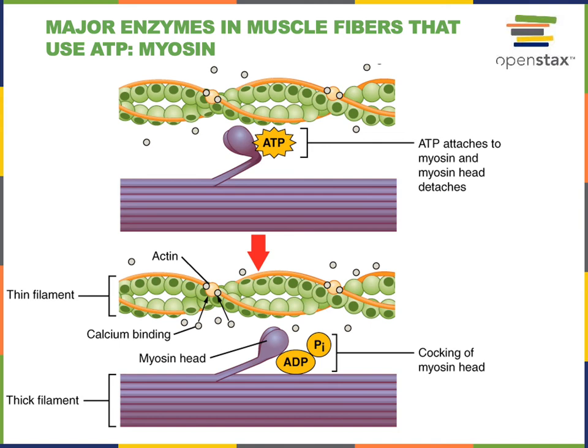Myosin is a major enzyme in muscle fibers that uses ATP. Remember from the power stroke cycle of the sliding filament theory that in the third step, cross-bridge attachment, ATP attaches to the myosin head, stimulating cross-bridge attachment. Then myosin performs hydrolysis of ATP in order to fuel cocking of the myosin head in the fourth step of the power stroke cycle in the sliding filament theory.